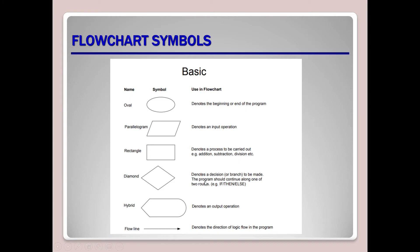Different symbols are used to draw flowcharts. The oval shape denotes the beginning or end of the program — you use this symbol at the start and at the end of your flowchart. The parallelogram denotes an input operation — whenever you want values from the keyboard or from a user. The rectangle denotes a process to be carried out, for example addition, subtraction, or division — whenever there is a process or action involved, you use the rectangle symbol.